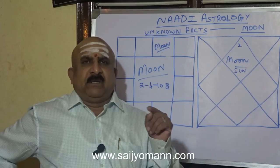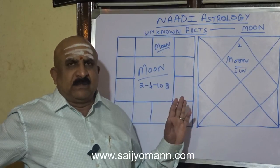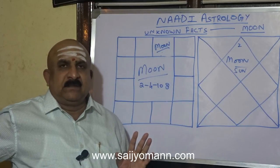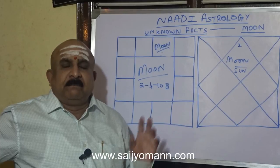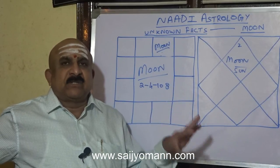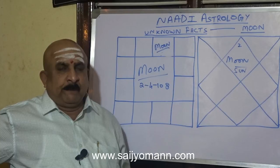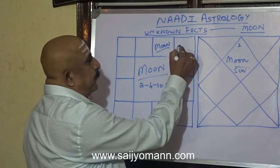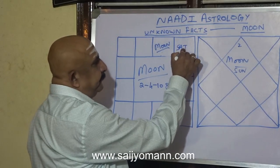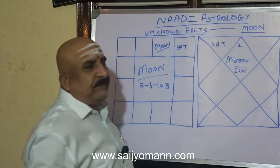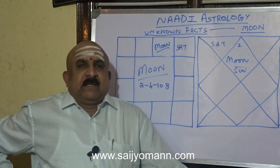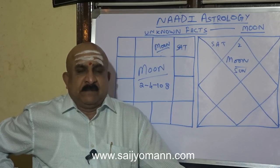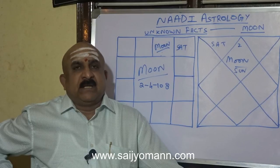Moon with Mercury, Moon with Mars — all those are known facts already covered in earlier videos. Now we are dealing with unknown facts. Suppose Saturn, a malefic, is placed in Moon's 2nd house — a material from Moon's placement.